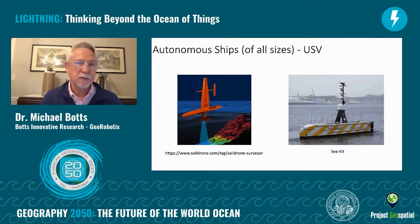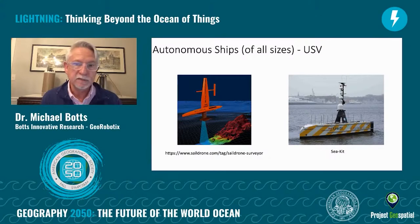There are also autonomous ships, called USVs or unmanned surface vehicles. Some of them can be driven remotely, some drive themselves. Some are powered by motors and some are sail systems, similar to the one on the left.